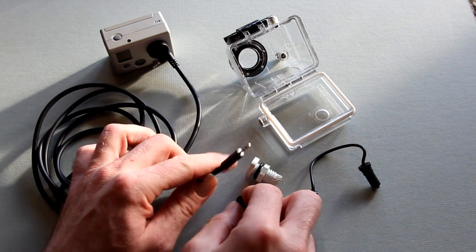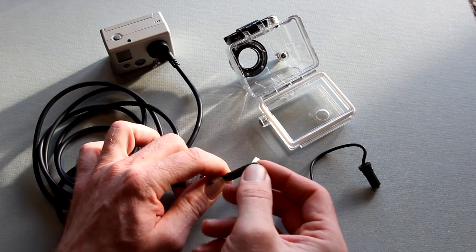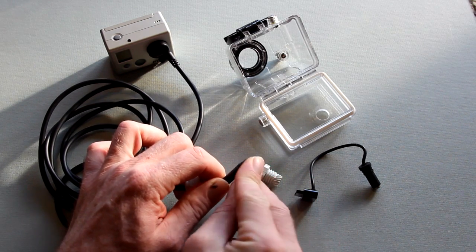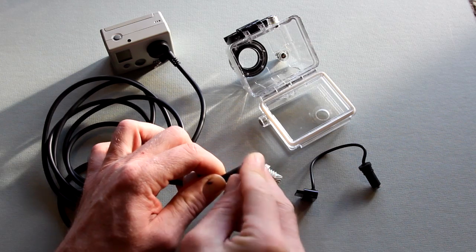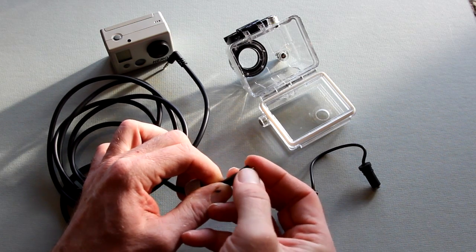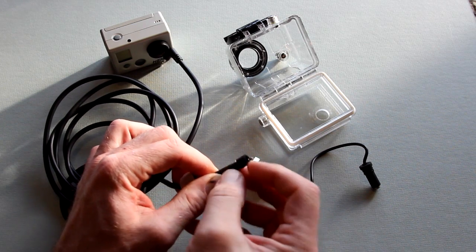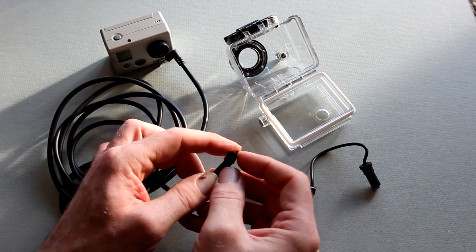Now that gasket, you kind of twist or push onto the end of the plug there until it's flush with the end of the black there. And that's going to give you that waterproof seal.